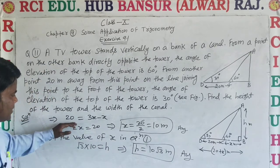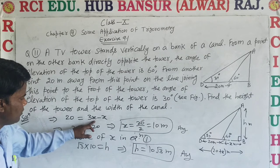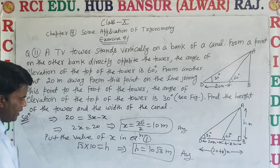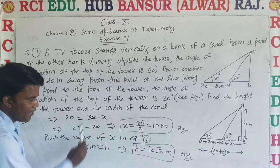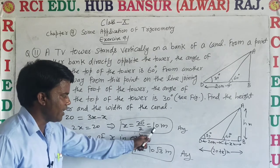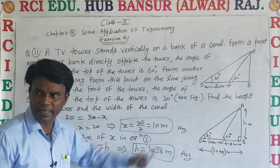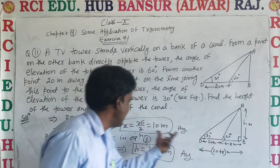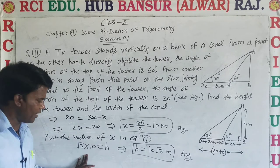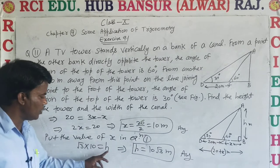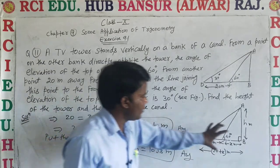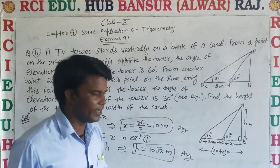Transferring terms, 20 equals 3X minus X equals 2X. So X equals 20 upon 2 equals 10 meters. The width of the canal is 10 meters. Put the value of X in equation 1: H equals root 3 multiplied by 10 equals 10 root 3 meters. So height of the TV tower is 10 root 3 meters.